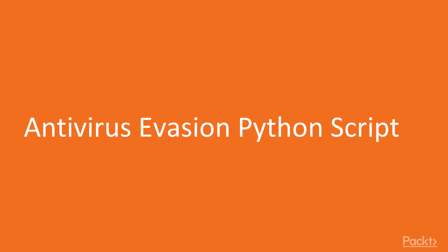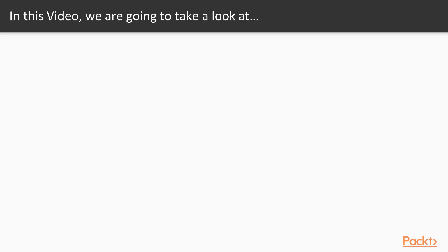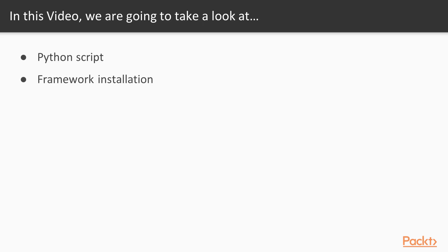Let's start with the first video of Section 6: Antivirus Evasion Python Script. In this video we are going to look at a couple of points — first we will learn about the Python script we are going to use, and then how we can install the framework. You need to open the Kali Linux operating system.